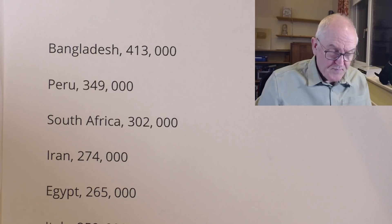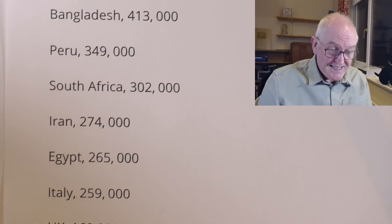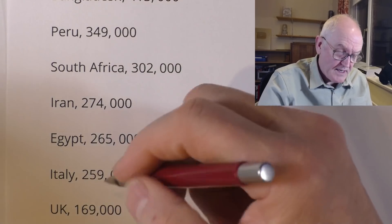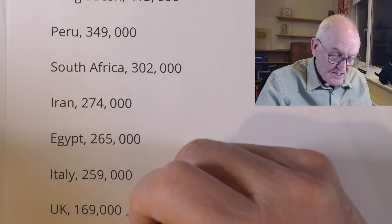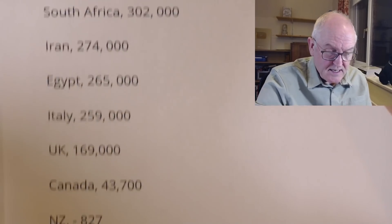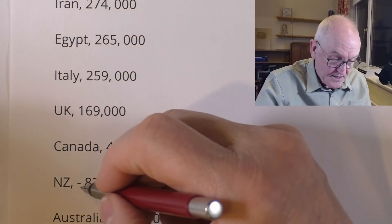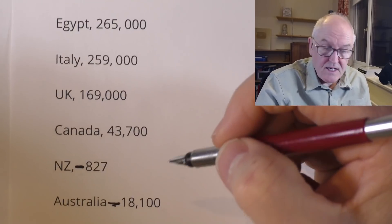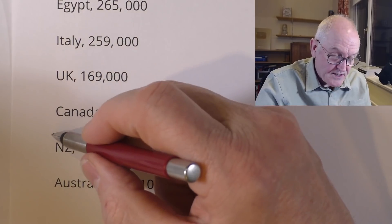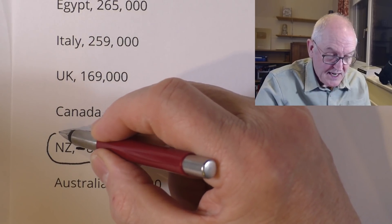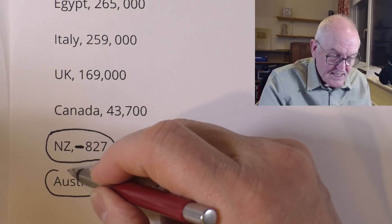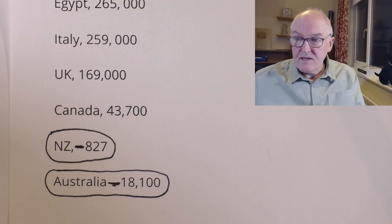Continuing down the list: Iran, Egypt, and Italy — Italy surprisingly high at 259,000 people. The UK had 169,000 excess deaths, followed by Canada. Notably, New Zealand and Australia are both in negative territory. The excess deaths in New Zealand during the pandemic period were 827 less than you would expect, and in Australia it was 18,100 less than expected. They're the only countries I found on the list in negative territory.